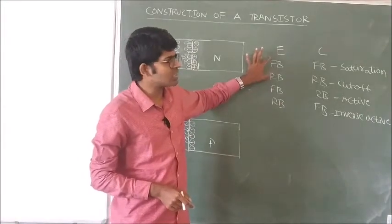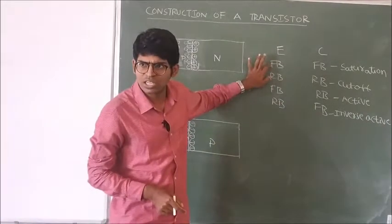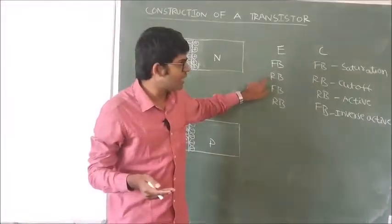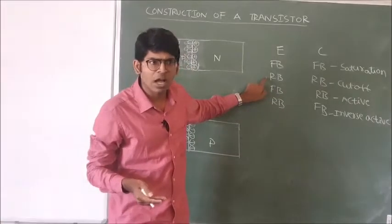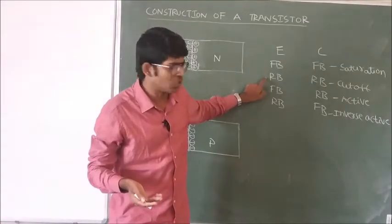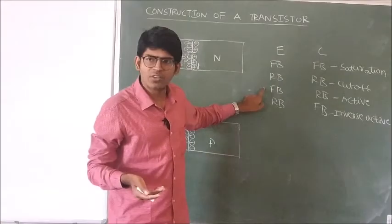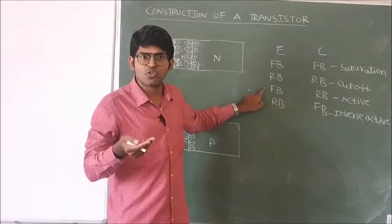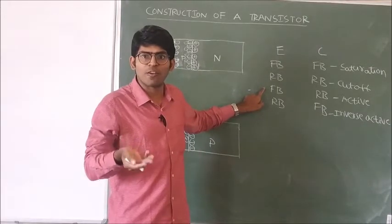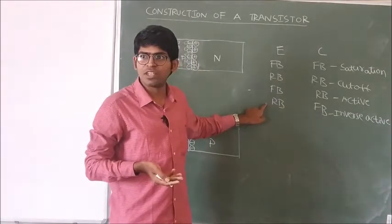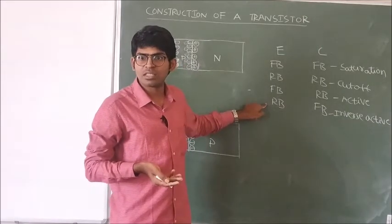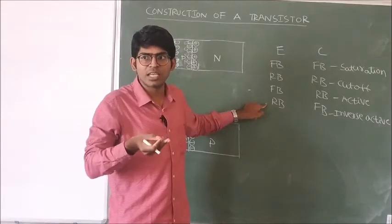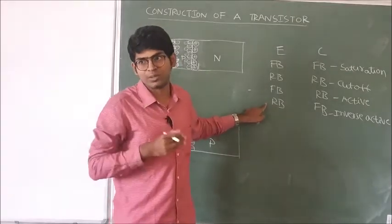So what is the use of the transistor in the saturation region? It acts like an on-switch. In the cut-off region? It acts like an off-switch. In the active region? We use it for amplification. In the inverse active region? It acts like a resistor.